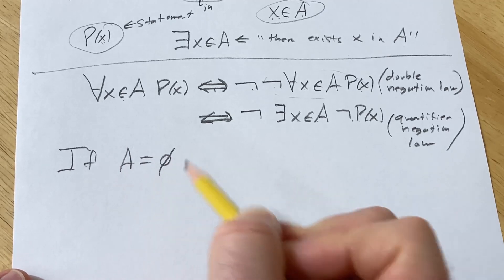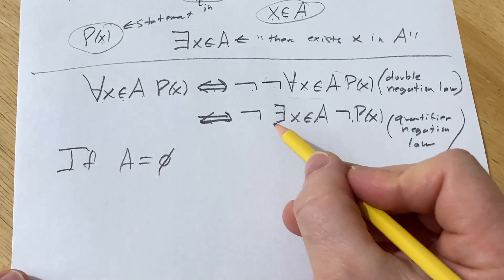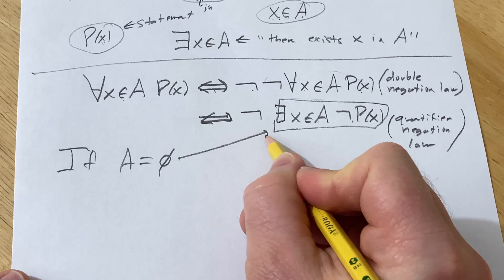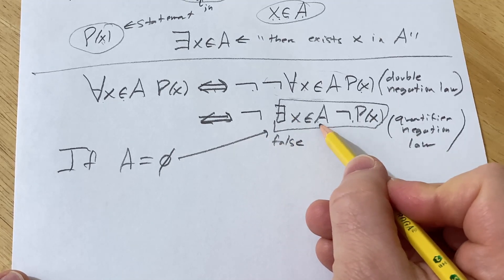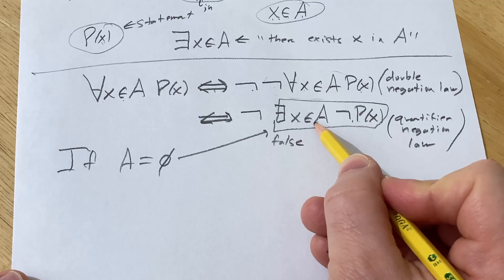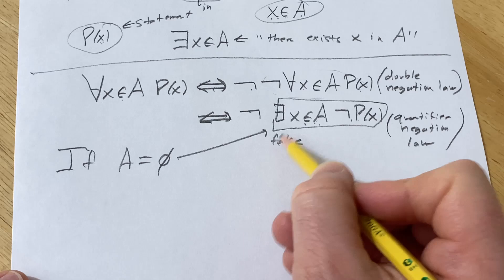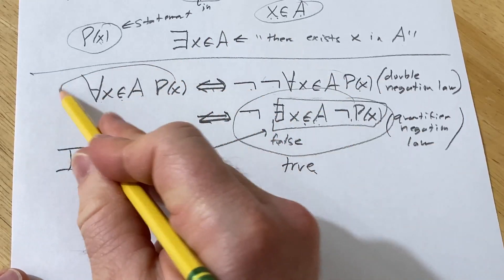If A is equal to the empty set, okay, so if A is actually the empty set, there's nothing in it, there's no way that this can be true. So if this is true, then this is false, right? Because there's no X's in A, so there can't exist an X in A. So this is false. But the opposite of false is true. So this whole thing becomes true. That means this is true.